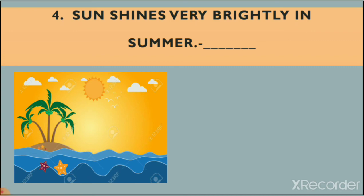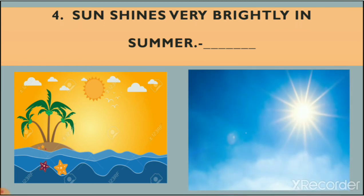Here you can see a picture of summer and the sun shines very brightly — you can see yellow color which represents sunlight. The second picture is a real picture of summer with sun and sunlight that is very bright. You cannot look at the sun during summer because it shines very brightly. So sun shines very brightly in summer — we write TRUE.